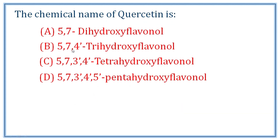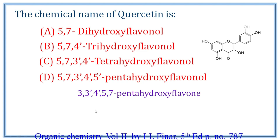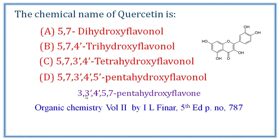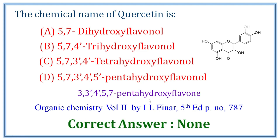Next question: the chemical name of quercetin is? This is an interesting question involving flavones. The correct IUPAC chemical name of quercetin is 3,3'-4',5,7-pentahydroxyflavone. That is option A. Correct answer: 3,3'-4',5,7-pentahydroxyflavone.